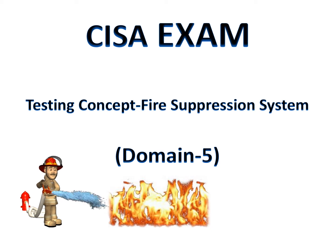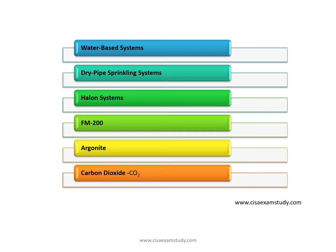Suppression system — a simple but very important concept for the CISA exam. The CRM covers the following types of fire suppression systems: water-based, dry pipe, halon, FM-200, Argonite, and CO2.